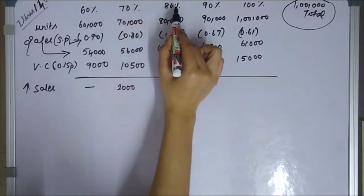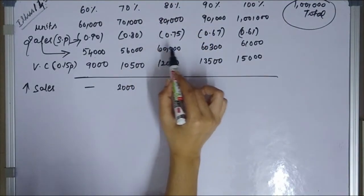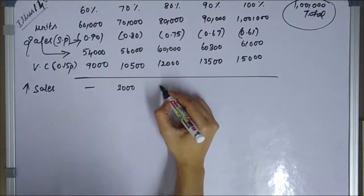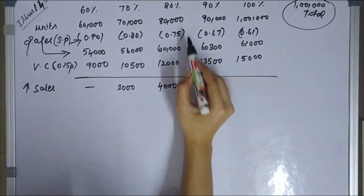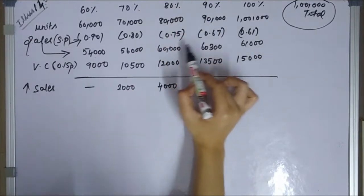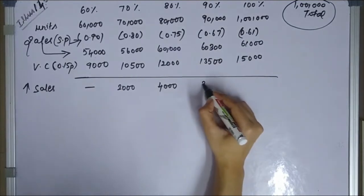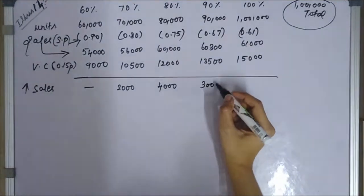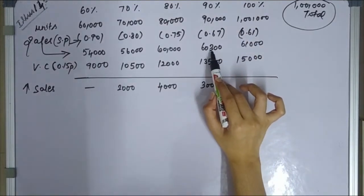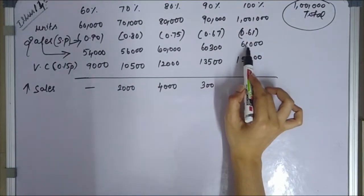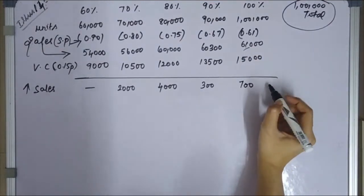From 70% to 80% capacity is another 10% increase. Sales go from 56,000 to 60,000, giving an incremental revenue of 4,000. From 80% to 90%, the incremental revenue is calculated as the differential cost difference. From 90% to 100%, sales go from 60,300 to 61,000 — an increase of only 700.